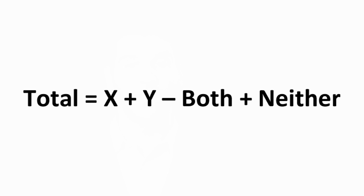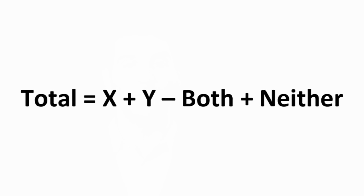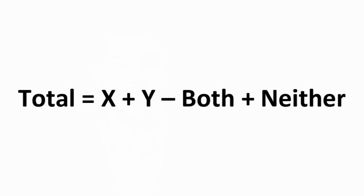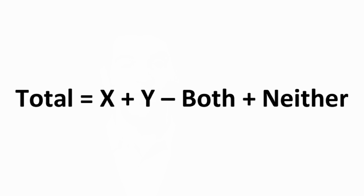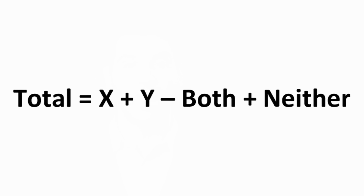This formula sometimes comes in handy when dealing with sets. If you have a set with x objects and another set with y objects, then the total number of objects is x plus y minus both plus neither.